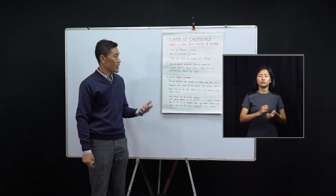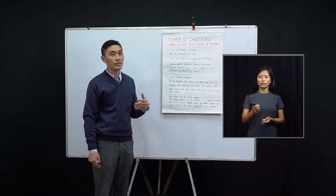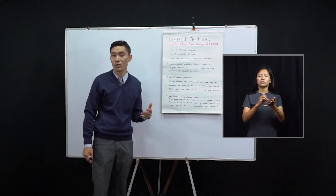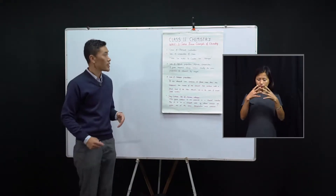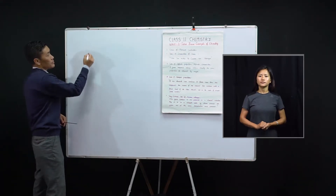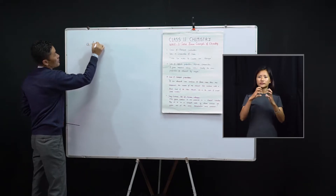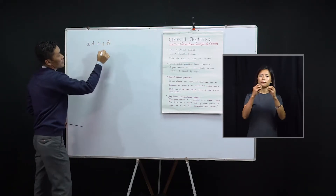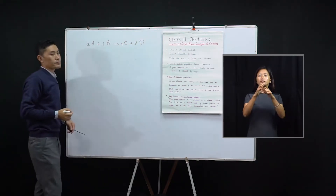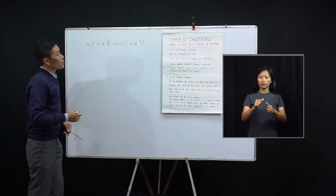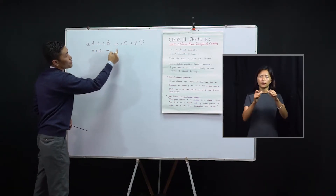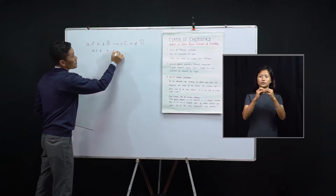Or we can also say it like this: the total mass of reactants is always equal to the total mass of the products during the course of any chemical or physical change. Let us understand this with an illustration. Suppose in a reaction, A moles of A react with B moles of B to give C moles of C and D moles of D. According to this law, the total mass of the reactants should be equal to the total mass of the products, that is C plus D.